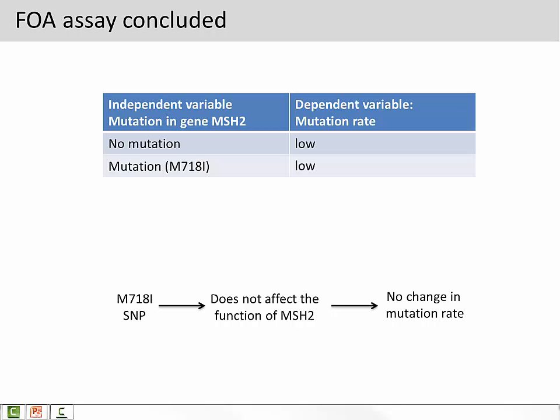The FOA assay will allow us to evaluate whether a particular SNP can abolish the function of MSH2. In other words, this assay will allow us to evaluate whether a patient carrying a particular SNP has a higher chance of developing hereditary nonpolyposis colorectal cancer. So that's it.